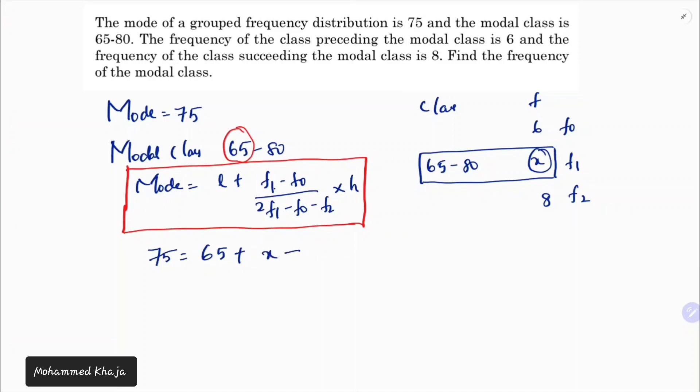F0 is 6, F2 is 8 times H. H is the class size. Since only one class is given, you can directly subtract these two values: 80 minus 65 which is 15.